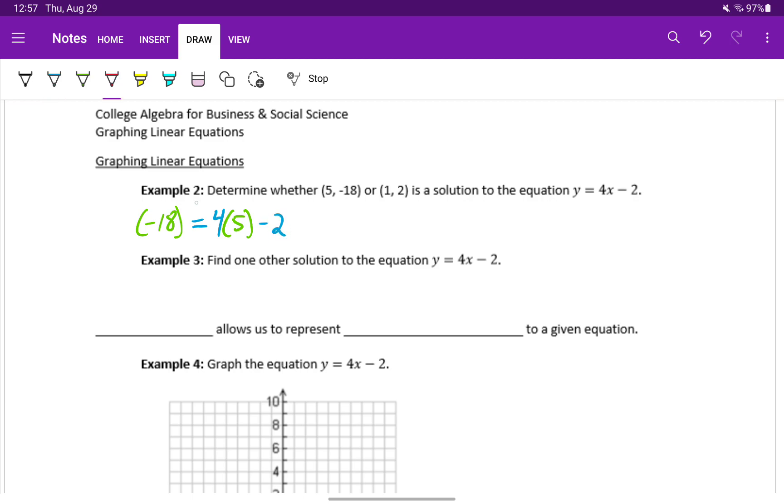And what we're checking is whether or not the two sides of this equation are equal when we have this specific x-y pair. In this case, on the left-hand side, we just have negative 18.